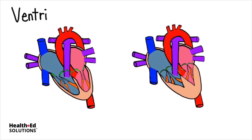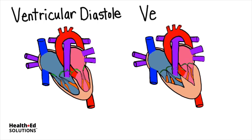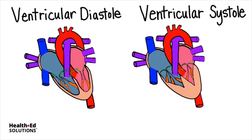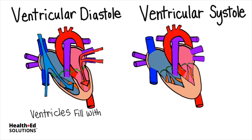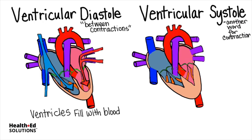Let's compare ventricular diastole, when the ventricles are between contractions, with ventricular systole, when the ventricles are contracting. During ventricular filling, the left side of the heart fills with oxygenated blood from the lungs, and the right side fills with deoxygenated blood returning from the systemic veins. So during this time, the ventricles fill with blood. Diastole is really the time between contractions, whereas systole is specifically referring to heart contraction.